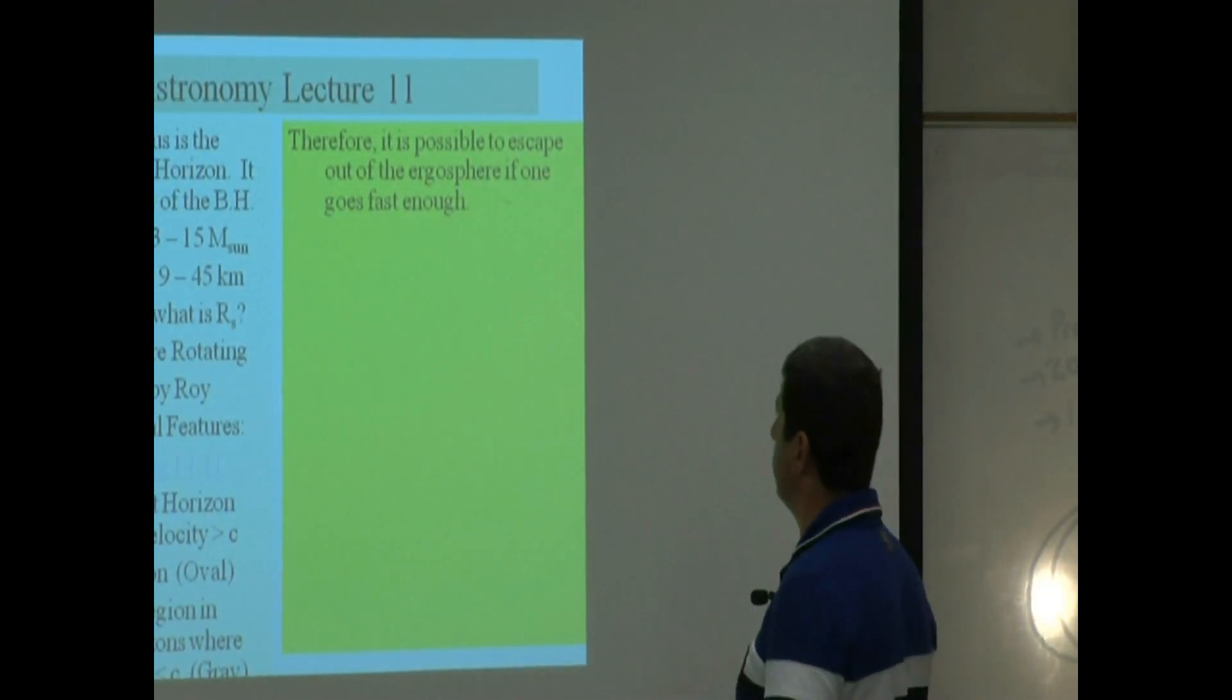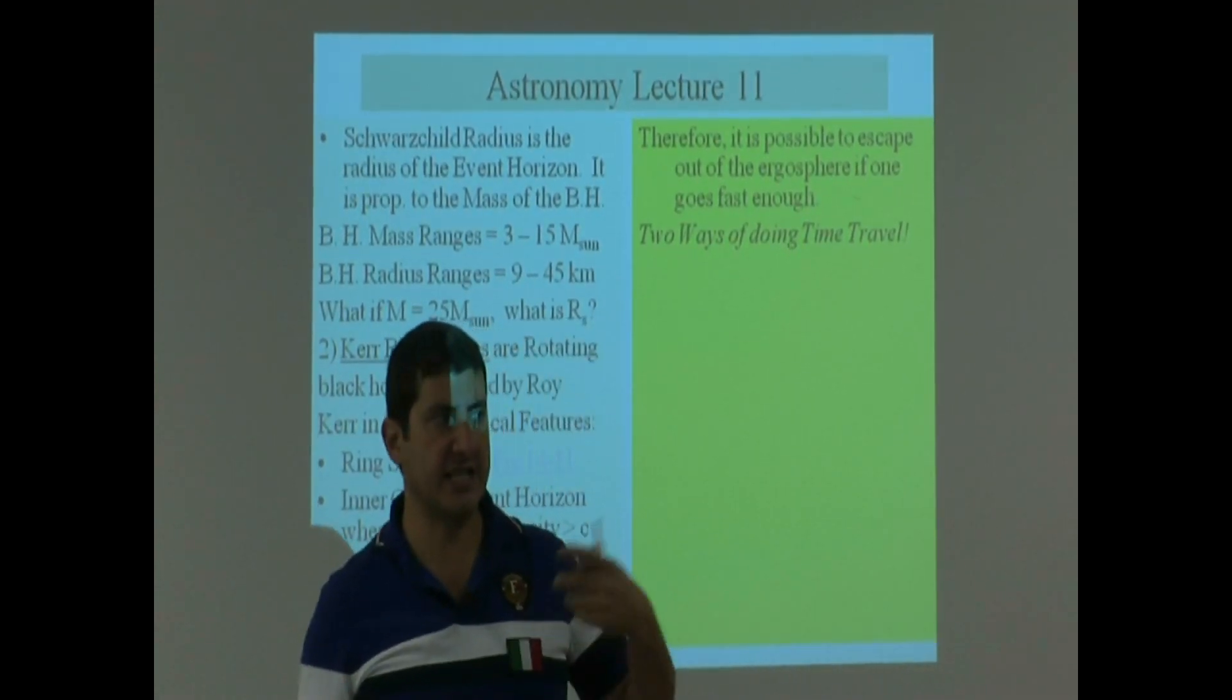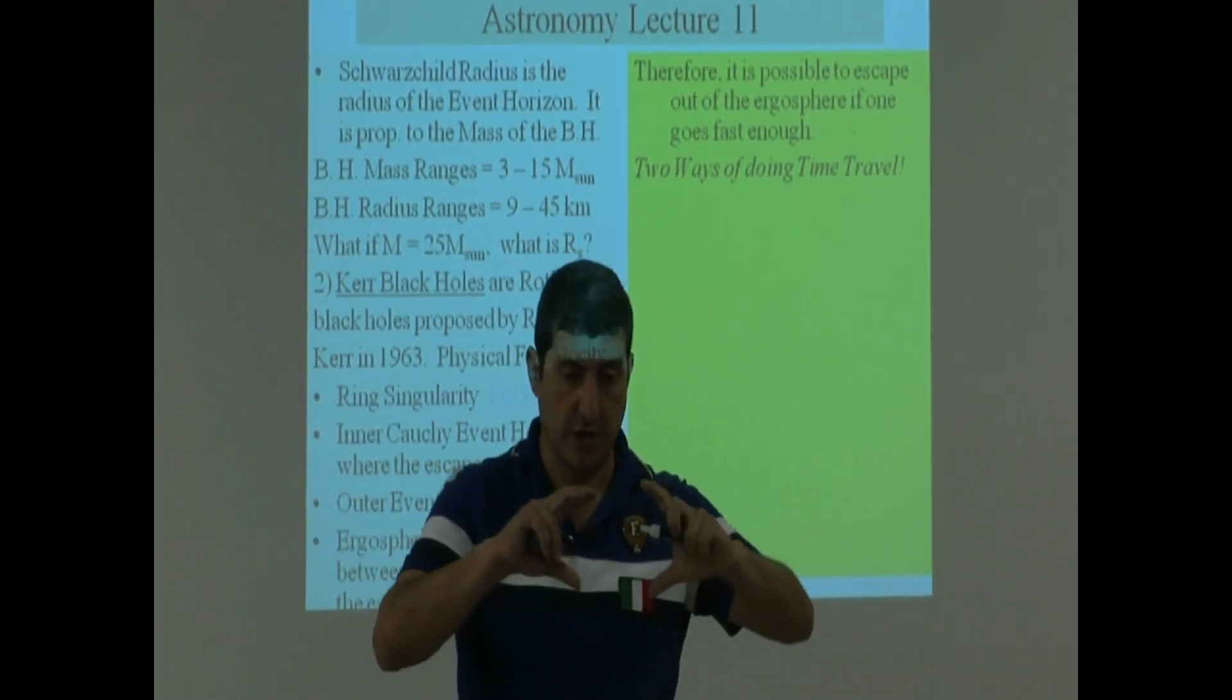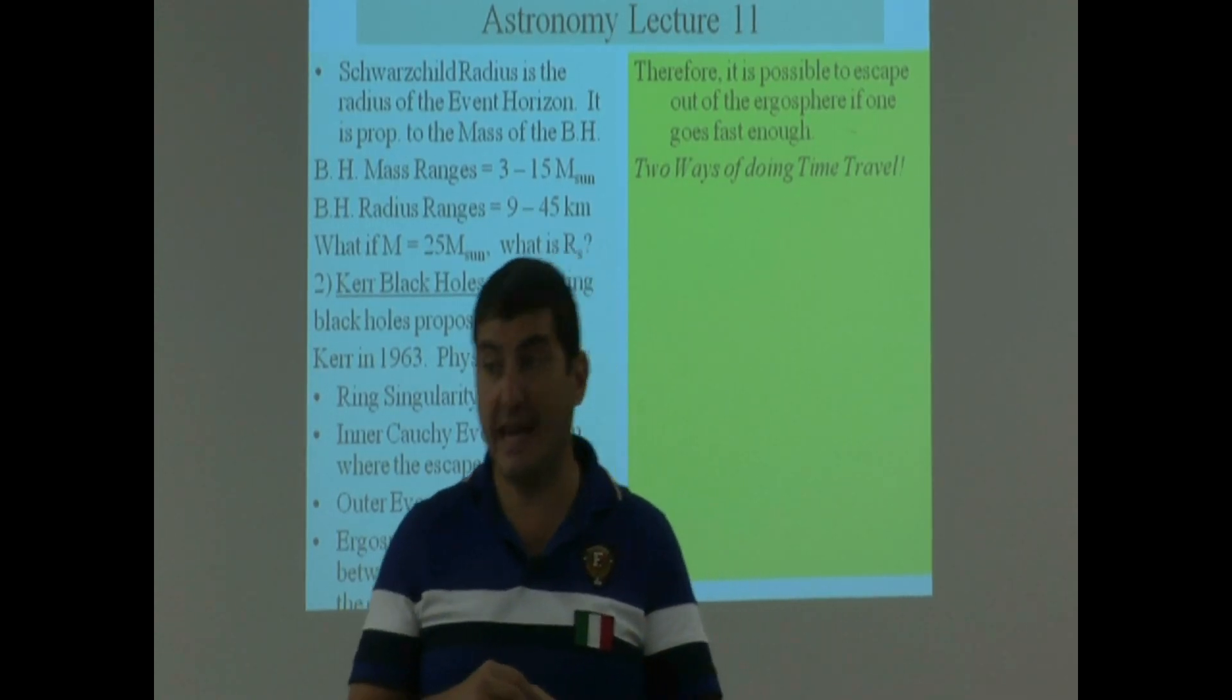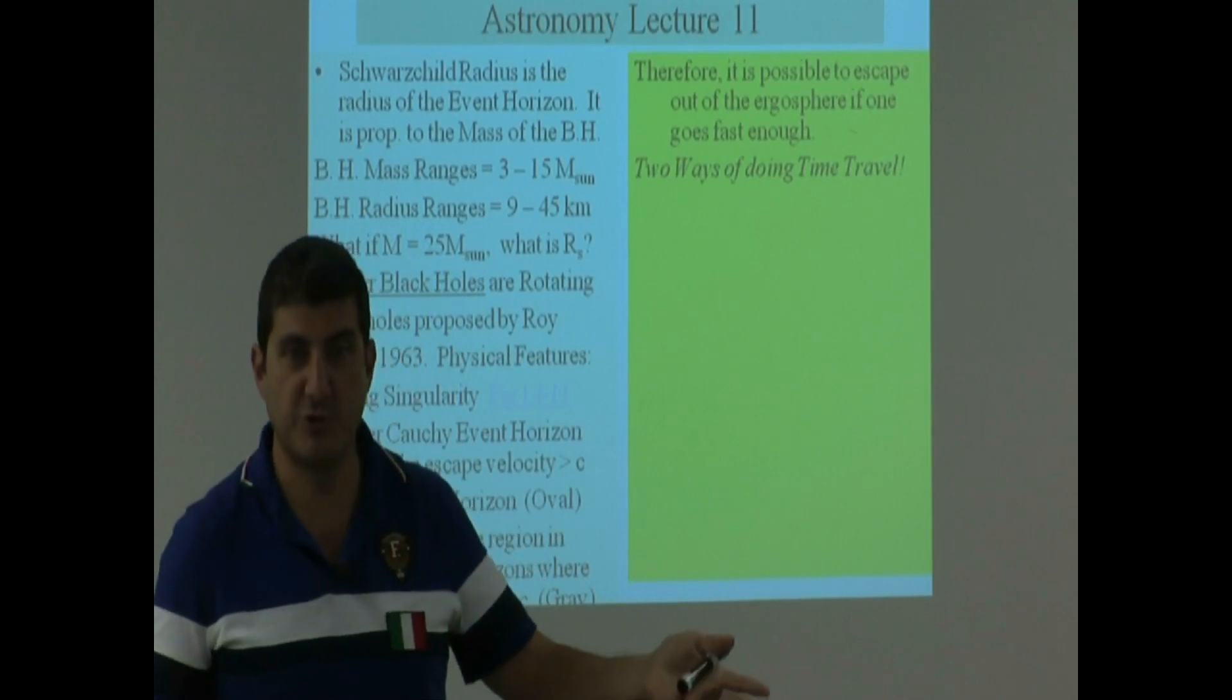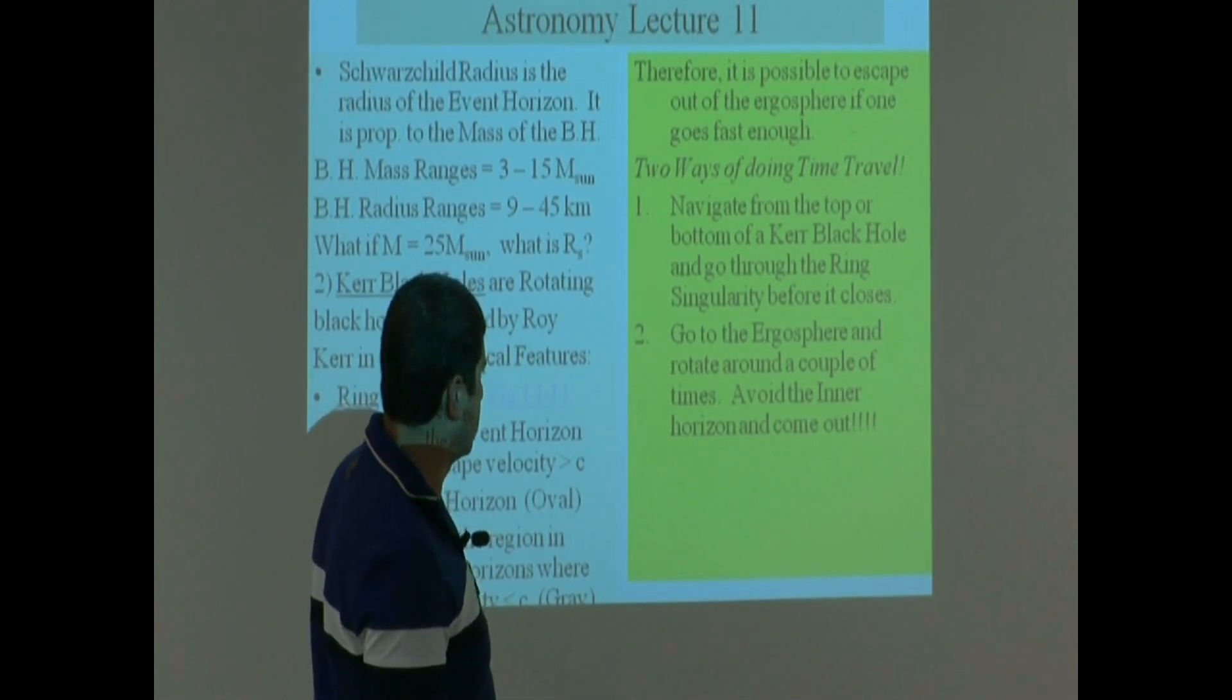These are the ones that a lot of people speculate that you could use as space travel or time travel. Therefore, it is possible to escape out of the ergosphere if one goes fast enough. Two ways of doing time travel. This is probably two of many ways. There's probably lots more out there that you can read on. Navigate from the top or bottom of a curved black hole and go through the ring singularity. Go through the ergosphere and rotate around a couple of times. Avoid the inner horizon and come out.